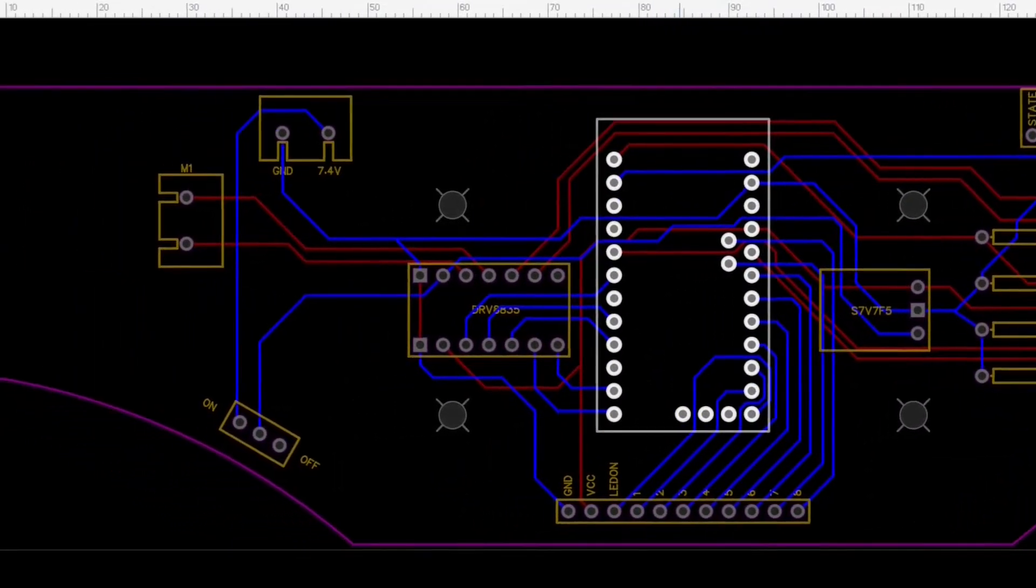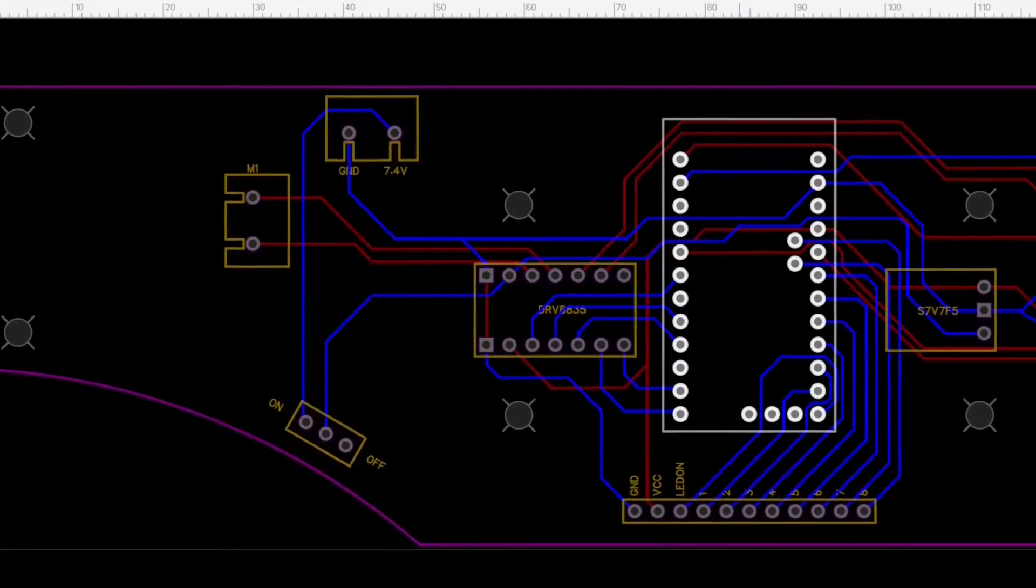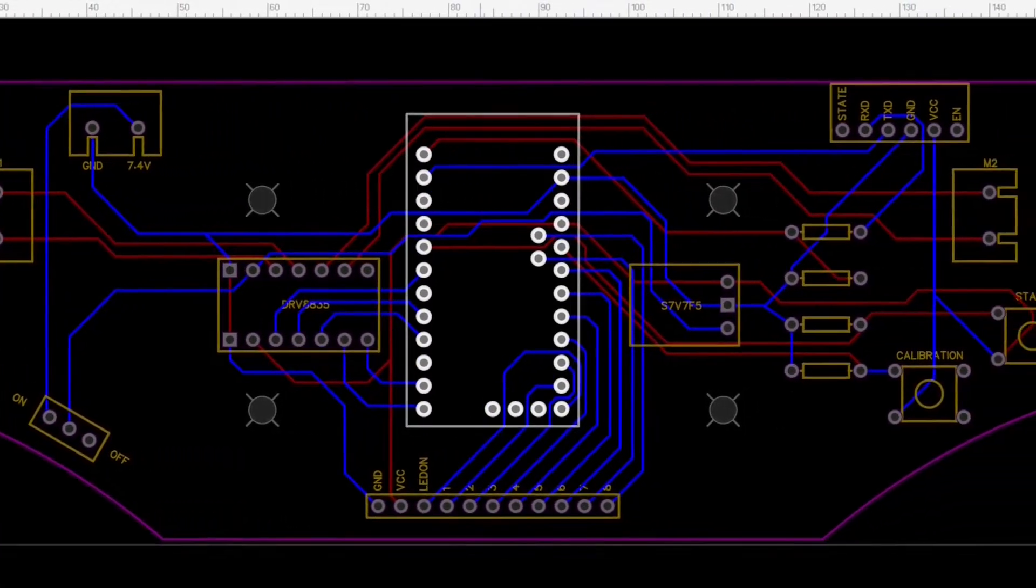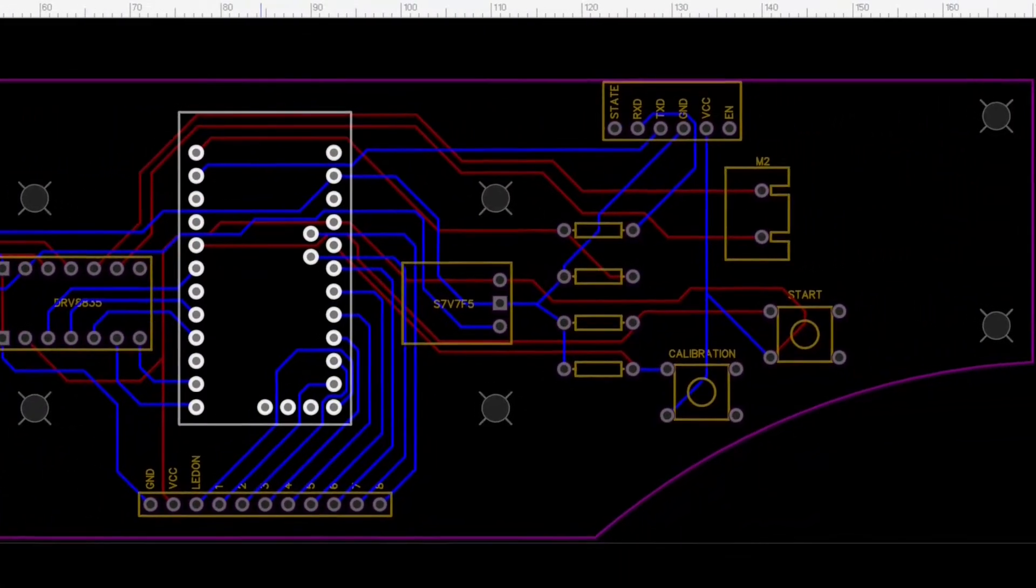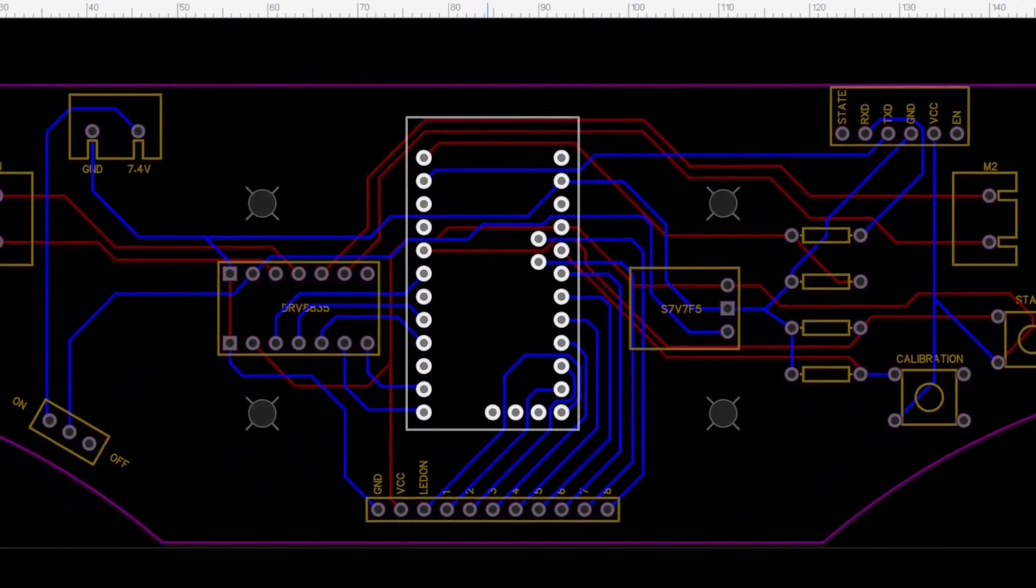The last one can be done manually or using an offered AI, which makes your job easier. Having already the connection outline, I have chosen the first one, making it a two-layered PCB.